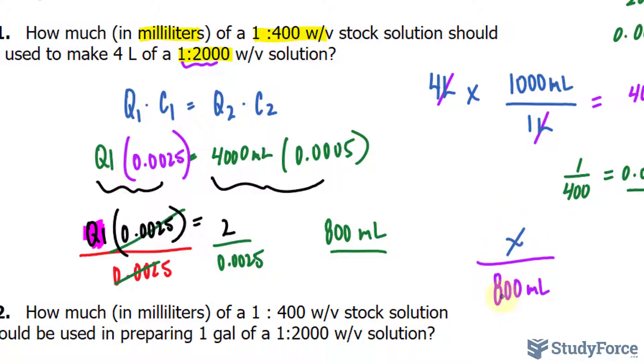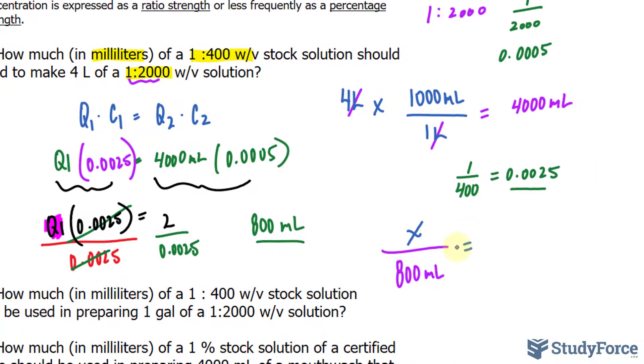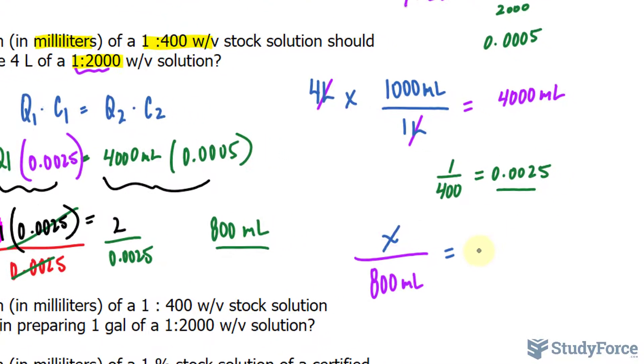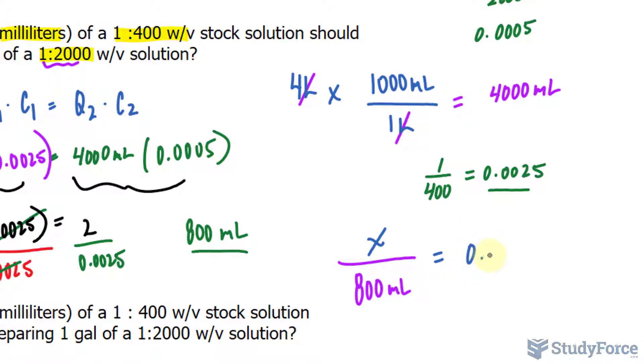X divided by 800 should give you the strength of the stock solution, and that was written as 1 to 400, which is equivalent to 0.0025. I'll take that value and place it here. So X over 800 should give you 0.0025.